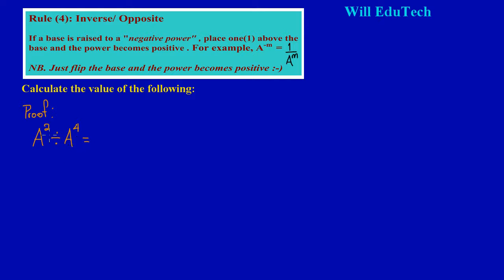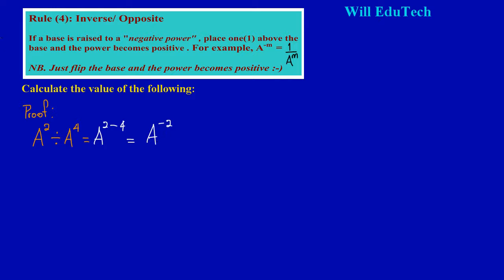Based on what we learned before — Rule Number Two, when dividing indices of the same base — we simply subtract the powers. So we have two minus four, which leaves us with a to the negative two. That's what we get from the first method.